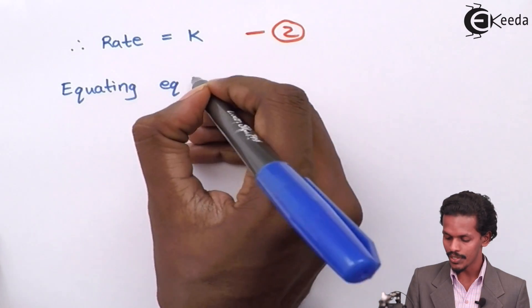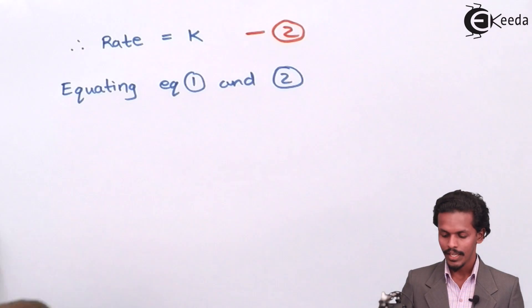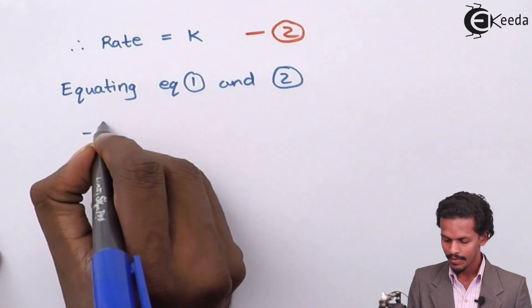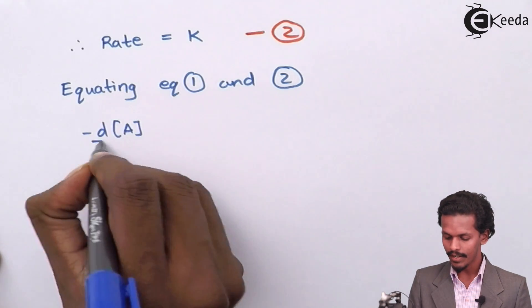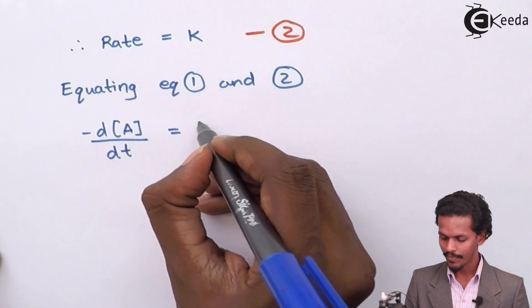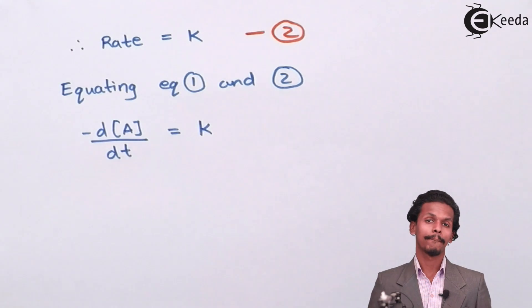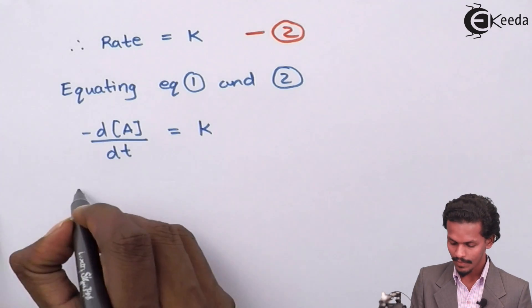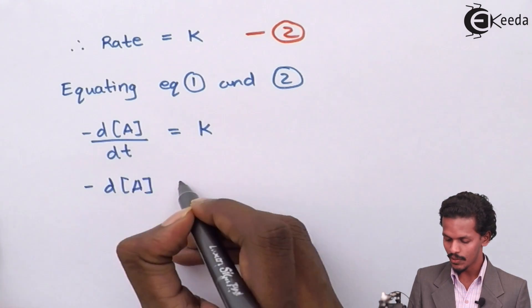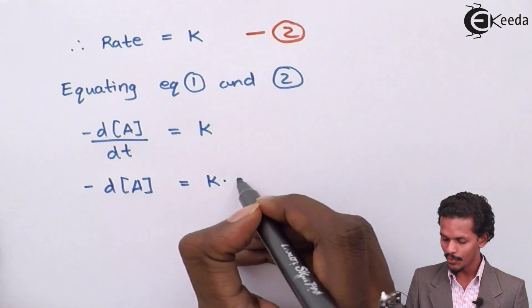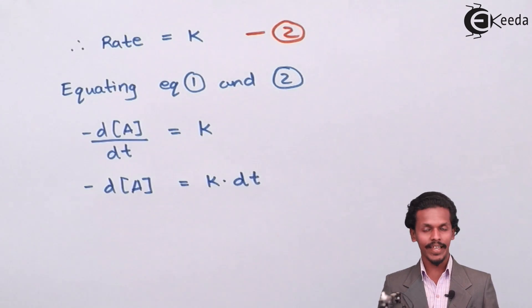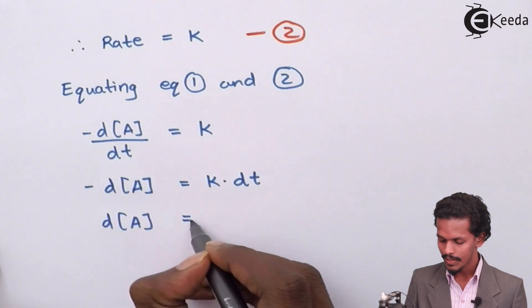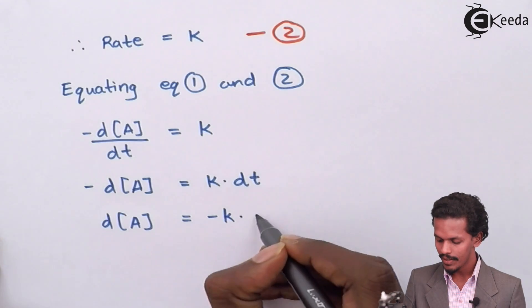Equating equation 1 and 2, we get minus d[A]/dt equals K. So I can do the further process like minus d[A] equals K dt, and I'll shift the negative sign to one side, that is d[A] equals minus K dt.